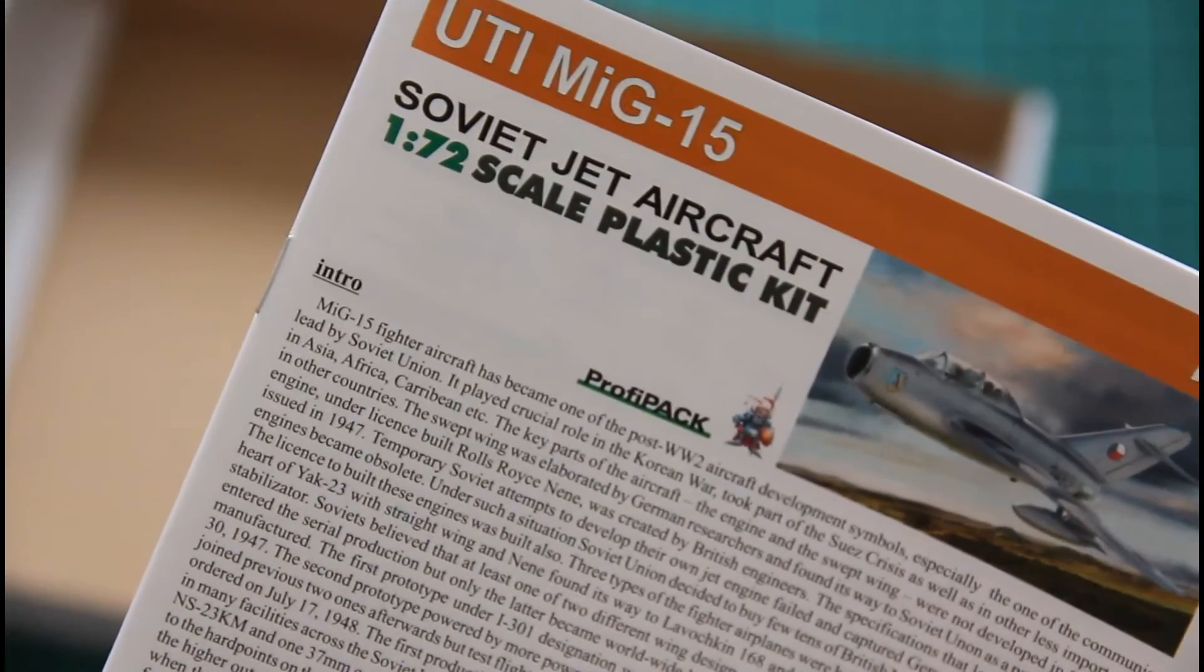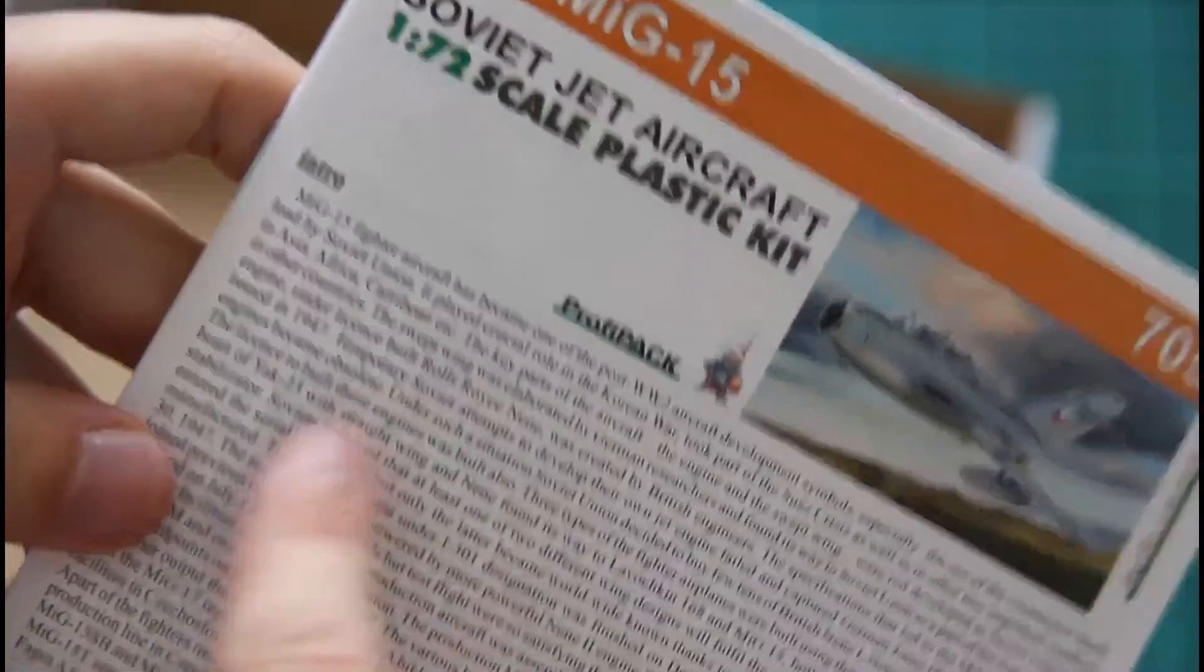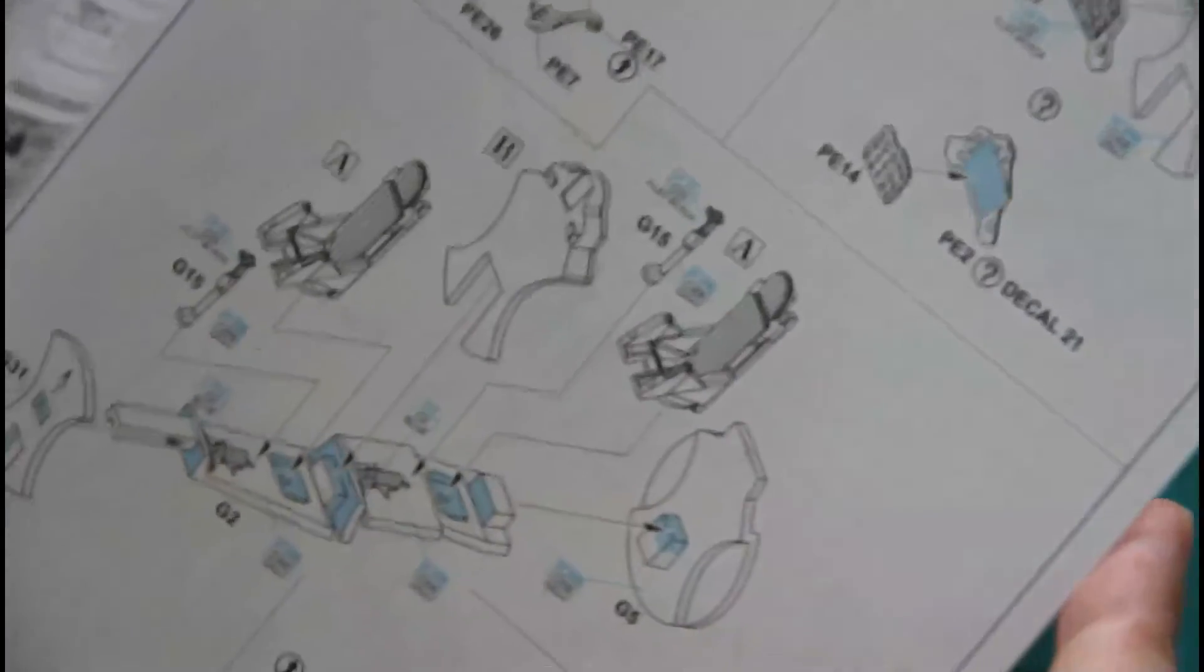And of course we have assembly manual which is typical for all ProfiPaks. So we have small brochure on glossy paper printed in color with short history note on the first page, then comes parts map and then assembly process starts. It's a typical Eduard schematic view of the assembly process so I doubt that you will have any difficulties with assembly.